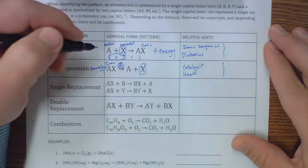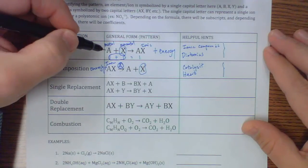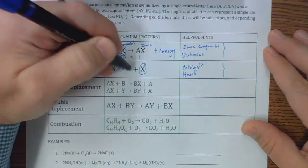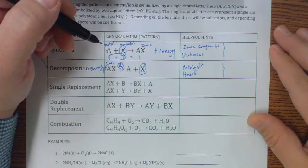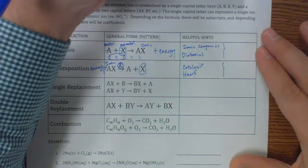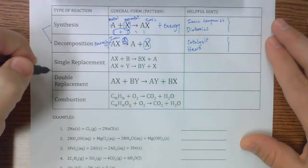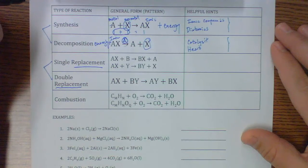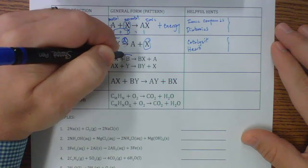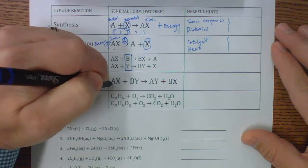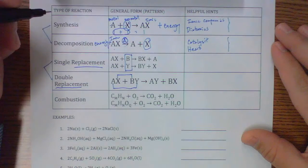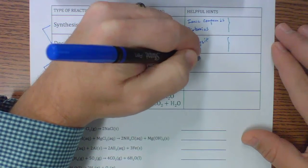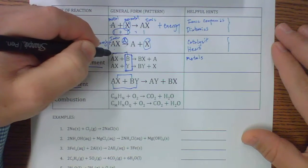To put it into a movie plot perspective: synthesis is like our couple going together and joining at the end, while decomposition is the movie plot where a couple ends up splitting apart. I also like to break this up into talking about these two together — single replacement and double replacement. Both are replacement type reactions. We're looking at whether it's a single element doing the replacing or a two-swapping reaction. For single replacements, we're always looking for that single element.